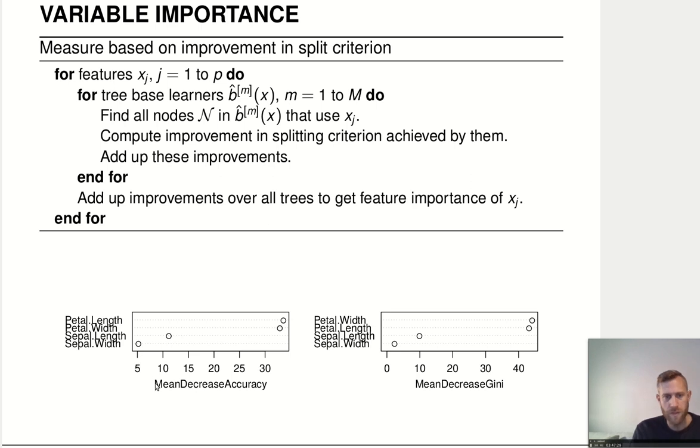And then, for example, for the iris dataset, we can look at the mean decrease in accuracy or mean decrease in the Gini index, which are basically equivalent to the Brier score loss. And we can see that petal length and petal width seem to be fairly important, sepal length and sepal width not so much. Alright, that's the first way of computing the variable importance.